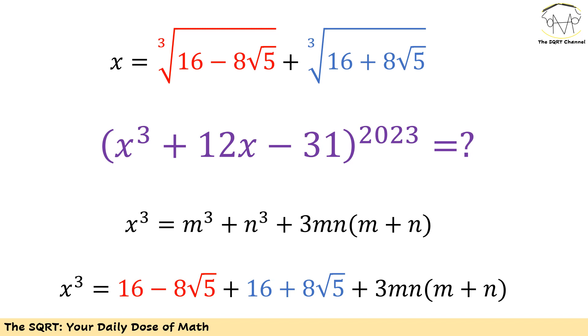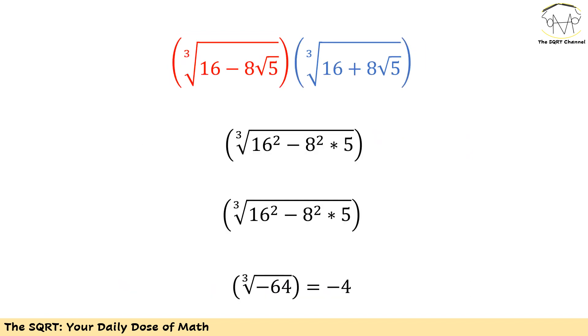Let's use mn as is and also m plus n as what we have here. Let's take one step back and find what we are going to end up with after multiplying the two terms that we have here. It's going to be the third root of 16 minus 8 square root of 5 times 16 plus 8 times square root of 5.